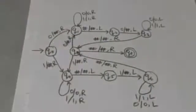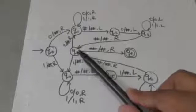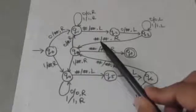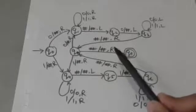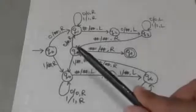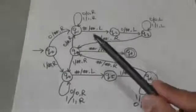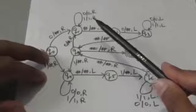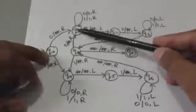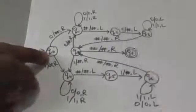If the symbol currently under the head is a blank symbol, then the Turing machine jumps to the final state QF. In state Q1, if the symbol under the head is 0, the Turing machine jumps to state Q1; if it is 1, it jumps to state Q4. The same procedure is then repeated.